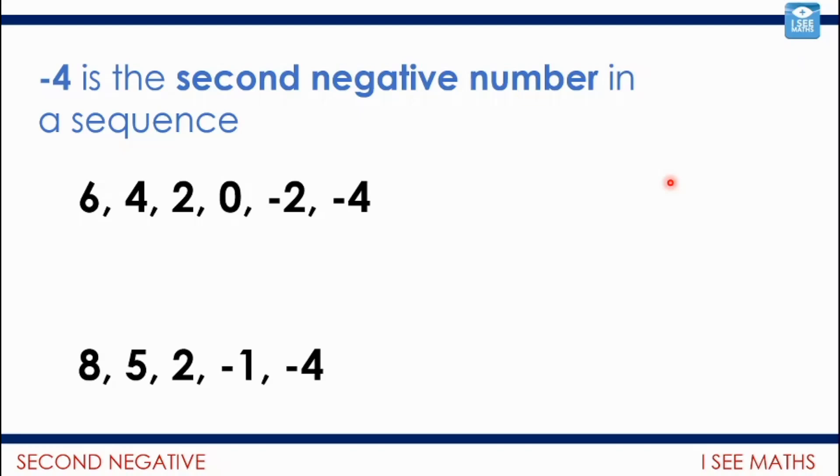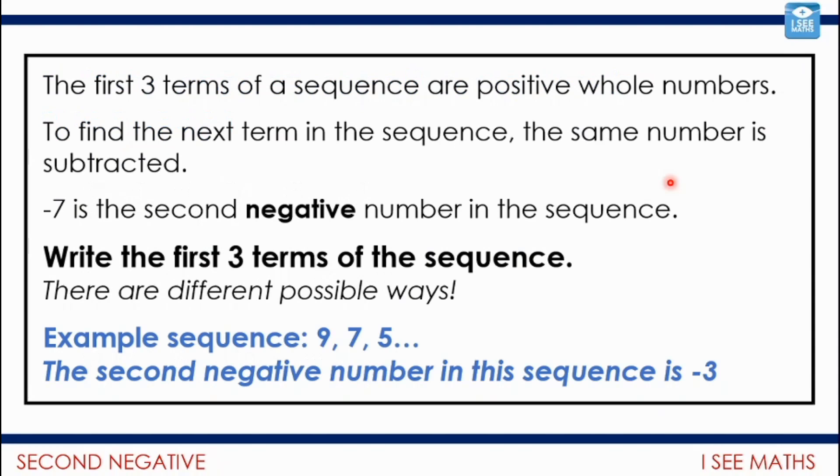Well, actually, there are if we use decimals. Let's say this one. This time I'm subtracting 2.5 each time. So I go down to my first negative number is minus one and a half. And then I get to minus four. So here we go.